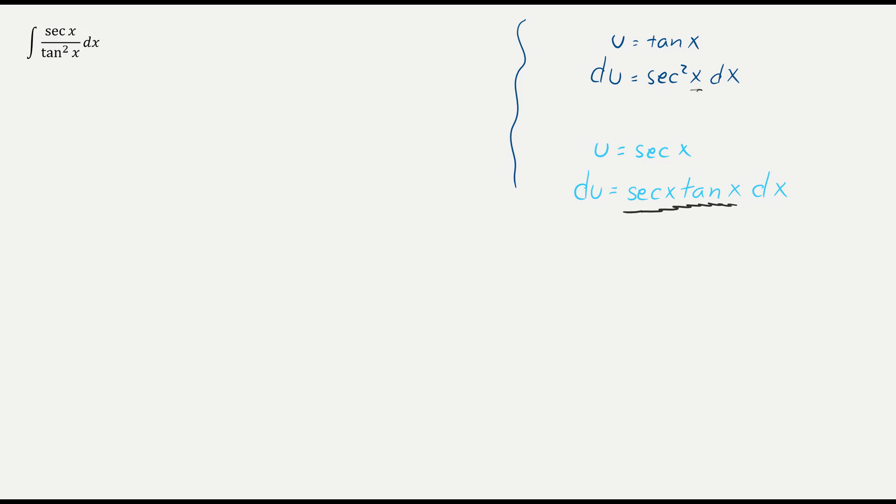And if I let u equal tan x, I have to save a secant squared x. And as you see in this problem, if I let u equal secant x, I don't have a secant x tan x left over. And if I let u equal tangent x, I don't have a secant squared.